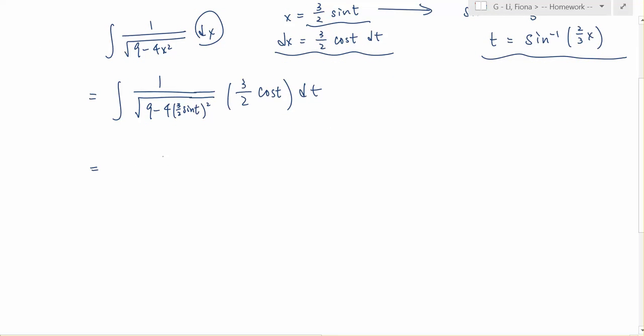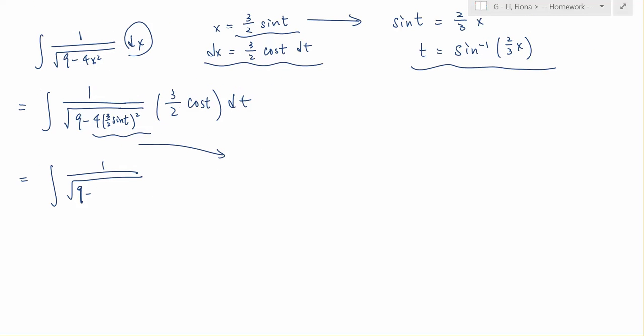So let's clean the second step up a little bit, and we will get the integral of 1 over square root of 9 minus. And let's do this part outside so we can sort of skip a step. And we will get 4 times 9 over 4 sine squared t. And if we multiply the 4 in, we will get only 9 sine squared t.